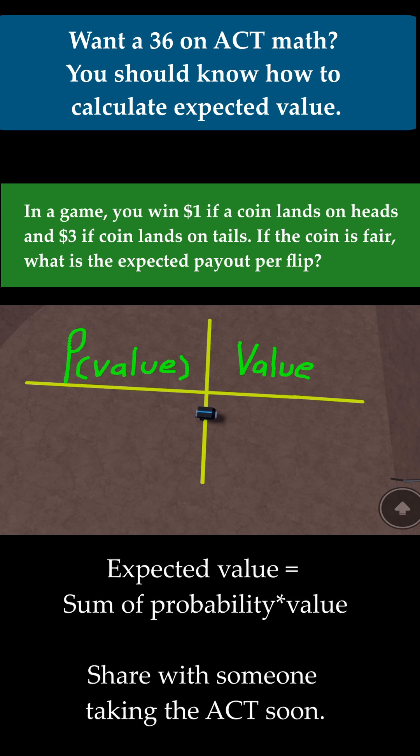Let's talk about what that means in the context of this problem. First off, there are a couple different values. We know that we get $1 if the coin lands on heads and $3 if the coin lands on tails. Now we need to find the probability of these values.